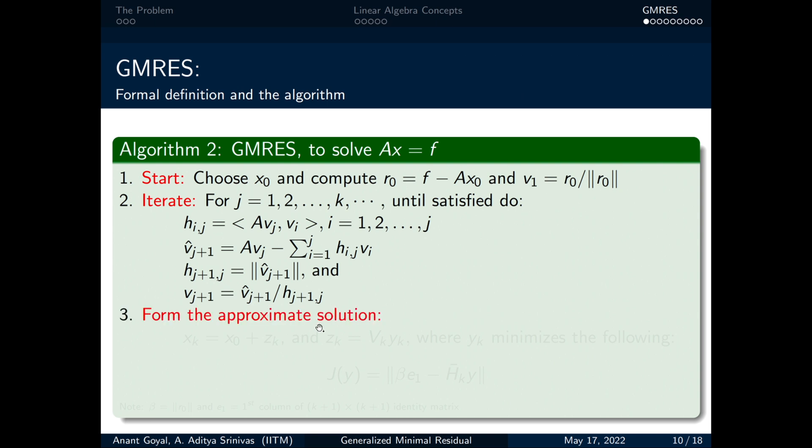In step 3, we write the approximate solution as xₖ equals x₀ plus zₖ where zₖ is some linear combination of vₖ governed by yₖ and we get yₖ by minimizing the expression J(y).